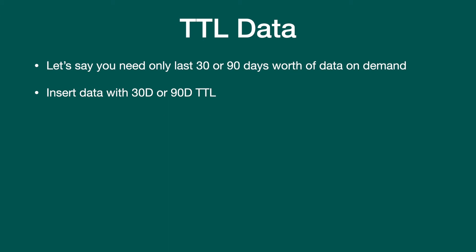After 30 or 90 days, Cassandra will automatically delete the data. What ends up happening is you'll have a limited number of partitions. If you only keep 30 days worth of data and you have 10 trucks, each truck on a given day gets one partition — 10 times 30 is 300 partitions. Even 20 years from now you will still have only 300 partitions, ensuring partitions remain bounded.